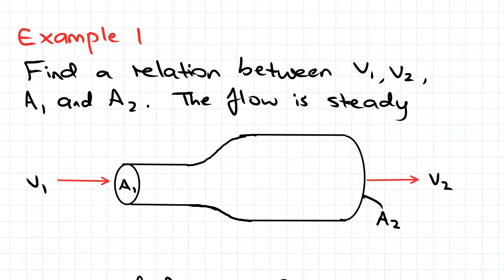So here's our problem. We've been asked to find a relation between V1, V2, A1 and A2. We've been told the flow is steady and here our flow will expand due to this nozzle here.